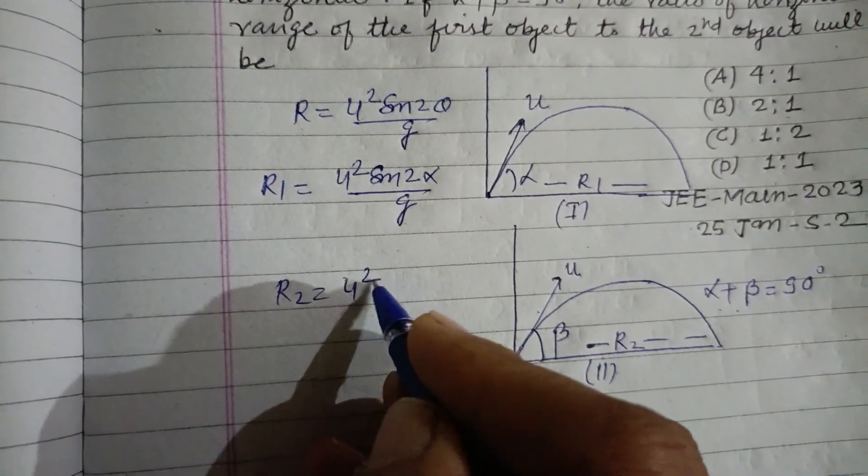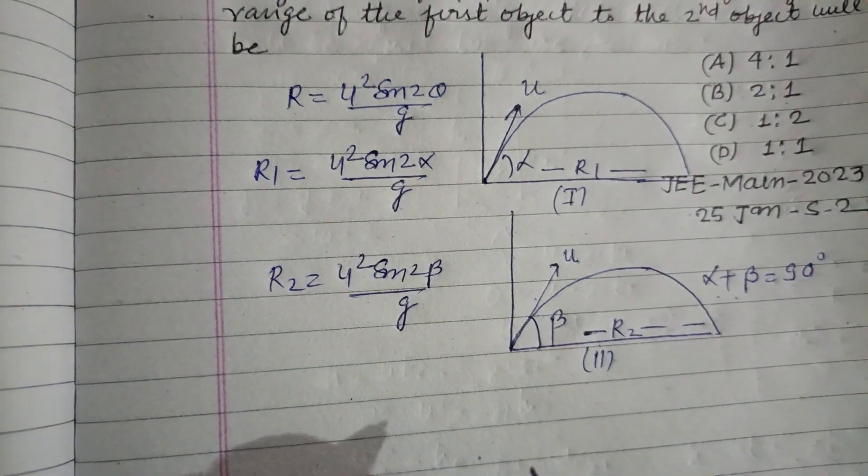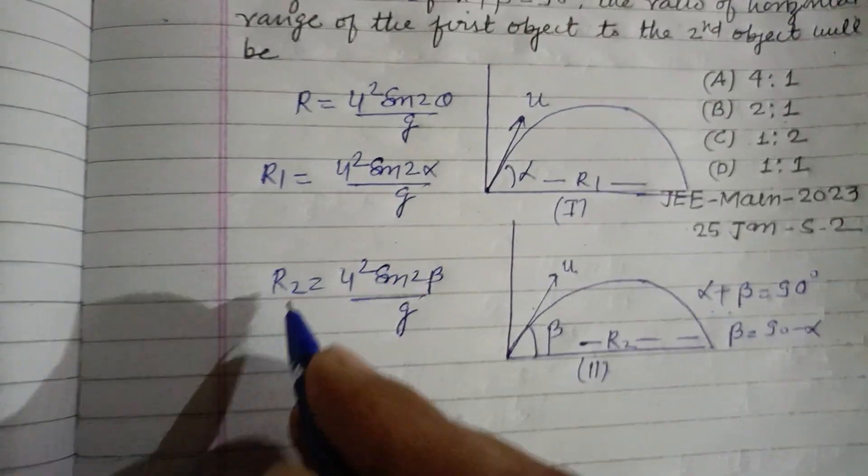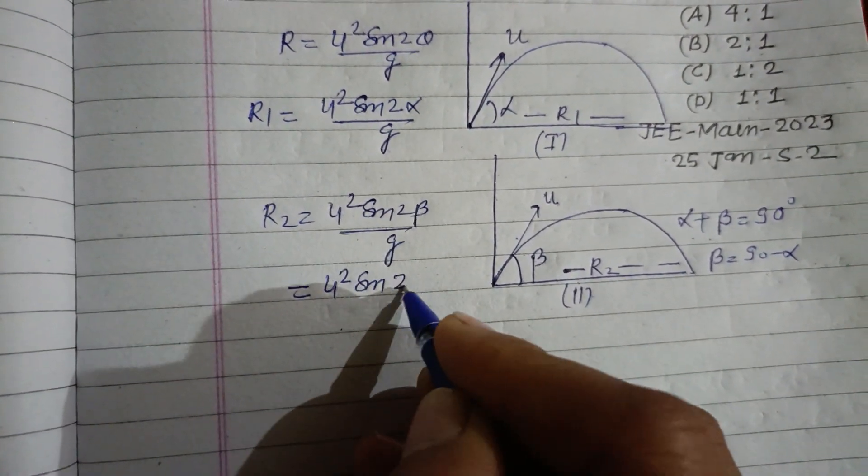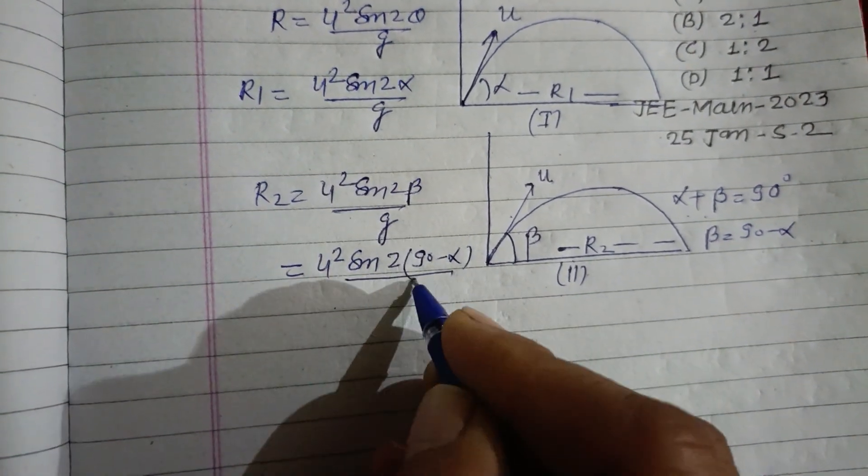equals u squared sin 2 beta upon g. But beta equals 90 minus alpha, we put here u squared sin 2 beta is 90 minus alpha upon g.